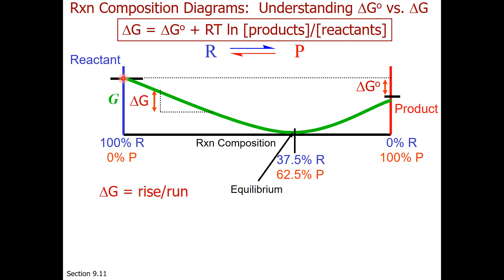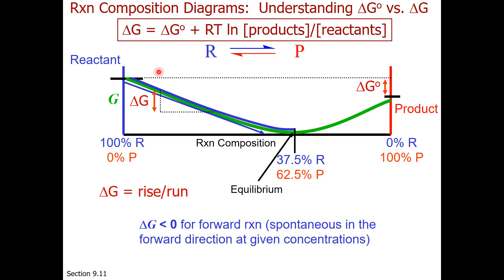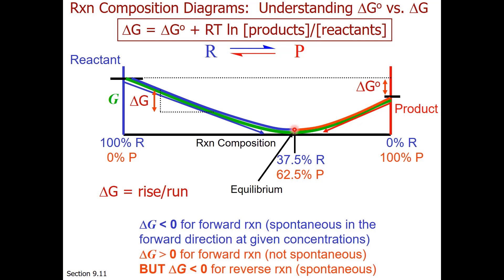Consider the reaction as it's running: we start at reactant, and the free energy change for the reaction as it occurs is the slope — rise over run. As we get started, the slope is negative. A negative delta G means go forward, so in that region the reaction will continue forward spontaneously. When we reach equilibrium, the slope is zero — this is when the free energy change equals zero. If we go beyond equilibrium concentrations, the slope becomes positive, meaning delta G is positive and the reaction will not spontaneously go forward.